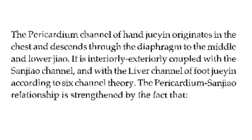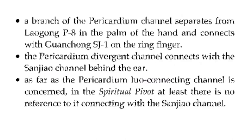The pericardium channel of the hanhjao yin originates in the chest and descends through the diaphragm to the middle and lower jiao. It is interiorly-exteriorly coupled with the sanghjao channel and with the liver channel of foot-jiao yin according to six-channel theory. The pericardium-sanghjao relationship is strengthened by the fact that a branch of the pericardium channel separates from P8 in the palm of the hand and connects with sanghjao one on the ring finger.